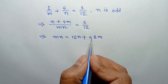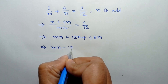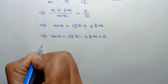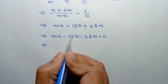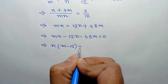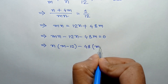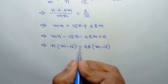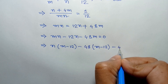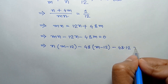Now taking the right side to the left, we can write mn minus 12n minus 48m is equal to 0. Taking common n from the first two terms, we can write n times (m minus 12), then taking out 48 to form (m minus 12), we get minus 48 times (m minus 12) with an extra term, giving mn minus 12n minus 48m is equal to 0.